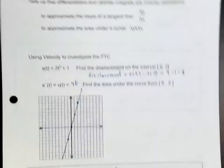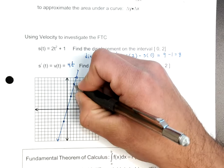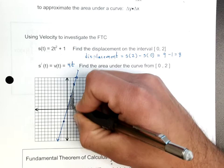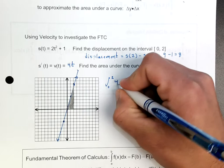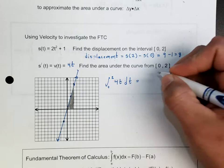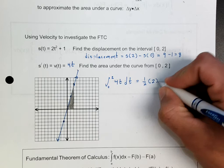Now they want us to find the area between 0 and 2. The integral between 0 and 2 of 4t — no matter what, we need to know the formula for this geometric figure. In this case, it's a triangle: one-half times the base times the height. The base is 2, the height is 8, and that gives you 8.